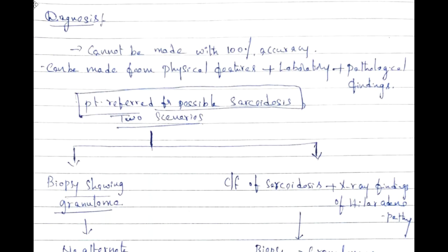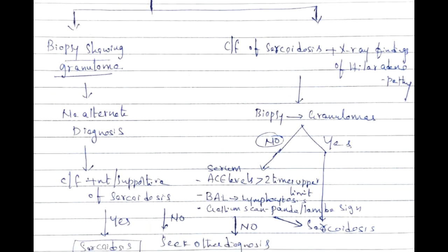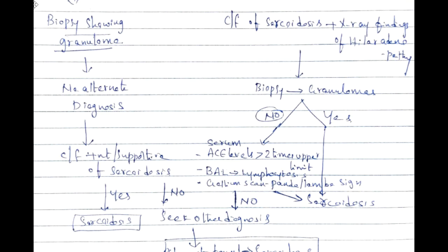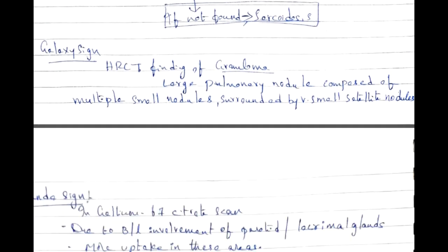Diagnosis cannot be made with 100% accuracy; it is based on combined physical, laboratory, and pathological findings. Two pathways: first, biopsy shows granuloma with no alternate diagnosis and supportive clinical features — sarcoidosis is diagnosed. Second, clinical features like cough, stridor, lupus pernio, or erythema nodosum plus hilar lymphadenopathy on X-ray prompt biopsy. If biopsy is negative, check ACE levels — if more than two times the upper limit — along with BAL lymphocytosis or gallium scan signs (panda sign, lambda sign) or galaxy sign on CT scan, a diagnosis of sarcoidosis is supported.